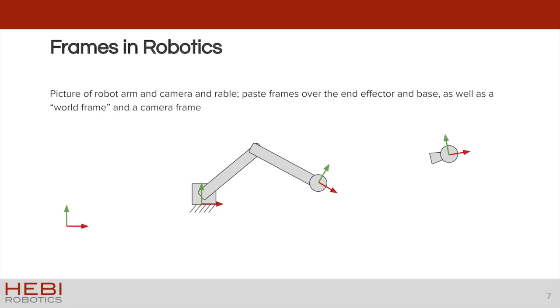Once items of interest are in the same frame, it becomes much easier to reason about the items and control the robot to manipulate or avoid these objects. For example, moving the robot end effector to the object seen by the camera requires knowing their relative position in the same coordinate frame.